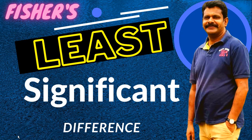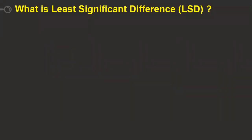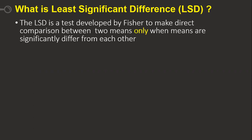How to do a Fisher's Least Significant Difference, and why it has been used? First of all, you should know what is called Least Significant Difference, LSD. It is a test developed by Fisher to make direct comparison. Here we are going to make a direct comparison between two means. When we want to do it, only when the means significantly differ. Whenever I am having an H0, I am saying this H0 is rejected so that there is a significant difference between the means.